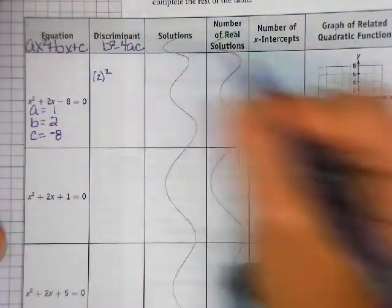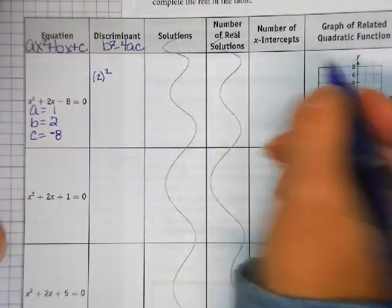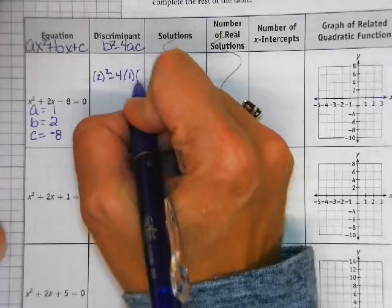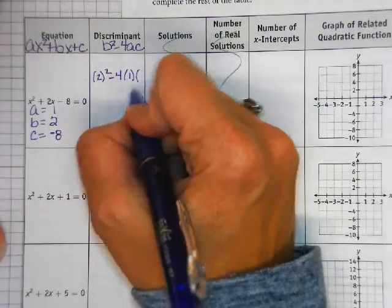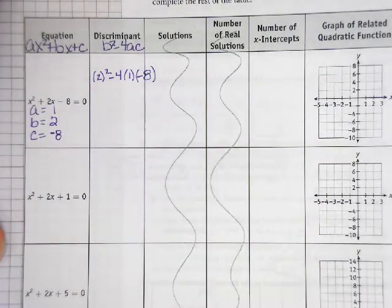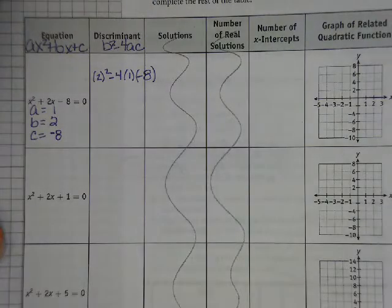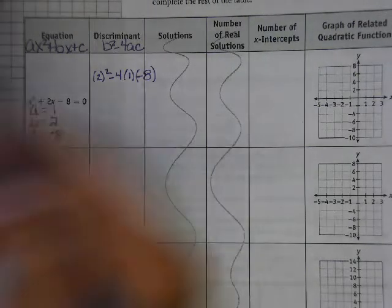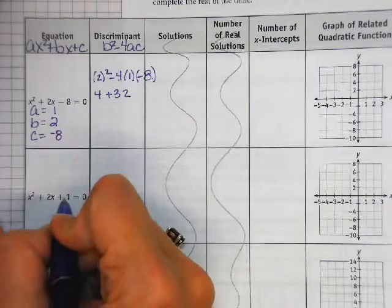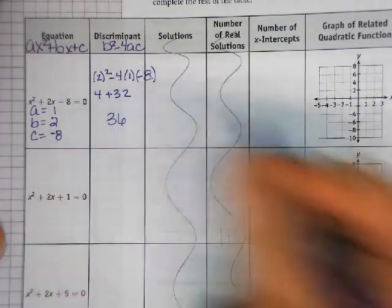And we're going to plug in what we know. When you square a number, especially if it's negative, you need to put it in the parentheses in that calculator. So it's just good practice to go ahead and do that. 2 squared minus 4 times 1 times negative 8. You can do this in the calculator. You can do this in your head. 2 squared is 4. Negative 4 times negative 8 is positive 32. So I get 36.